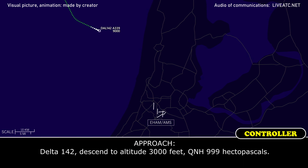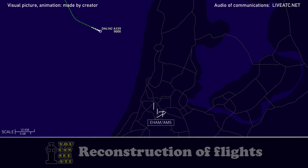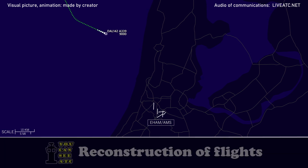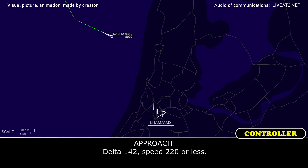Delta 142, descent altitude 3000 feet. Delta 142, speed 220 or less.